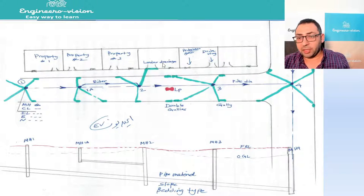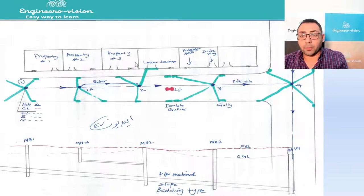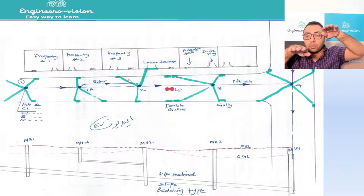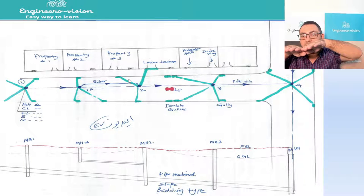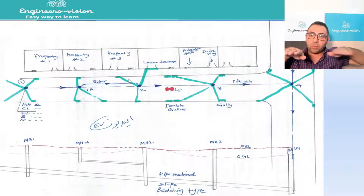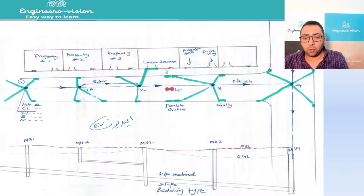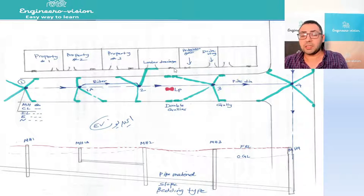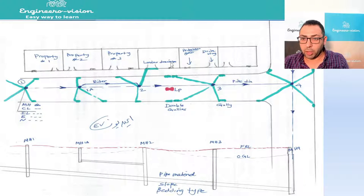We also have something called a linear drainage channel. Why do we need it? Consider properties — houses — where the house level is lower than the road level. When rain comes, water flows from the road into the property. To avoid this, we fix a linear drainage channel at the property edge to collect that water and take it into our surface water system. A negative slope means the property or gate level is lower than the road level, causing water to flow inward — and we must collect and dispose of that water through our network.